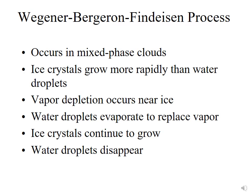We refer to this as the Wegener-Bergeron-Findeisen process. It occurs in mixed phase clouds where ice crystals grow much more rapidly than water droplets, vapor depletion occurs near the ice, and the water droplets evaporate to replace the vapor. The ice crystals continue to grow and water droplets disappear. The Wegener-Bergeron-Findeisen process is the primary mechanism by which mixed phase clouds grow hydrometeors to the size at which they can precipitate.